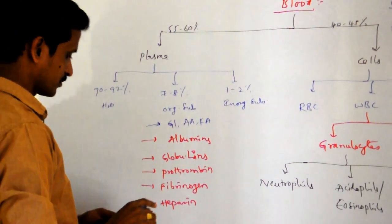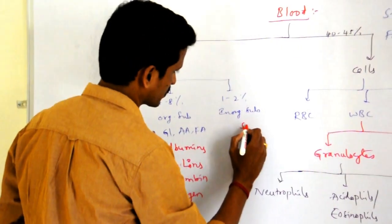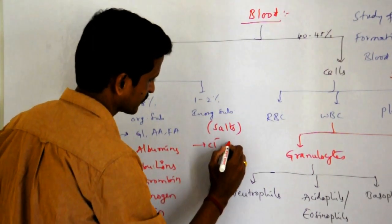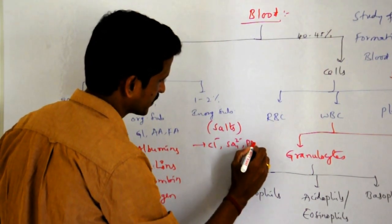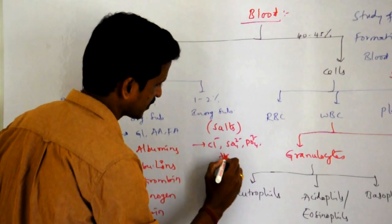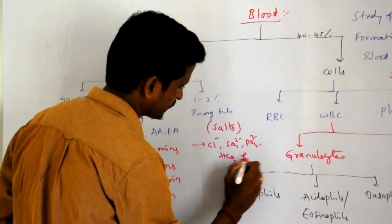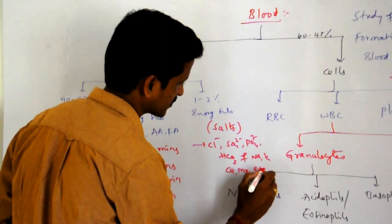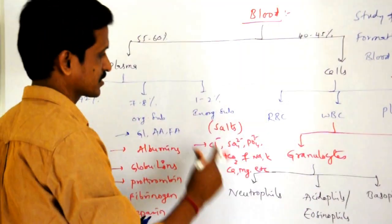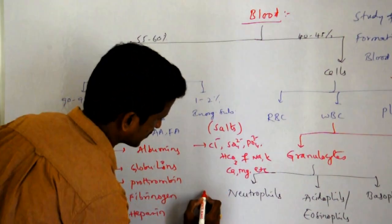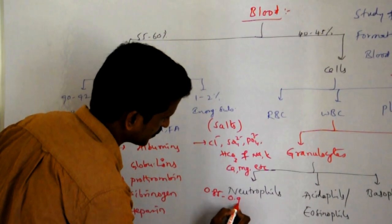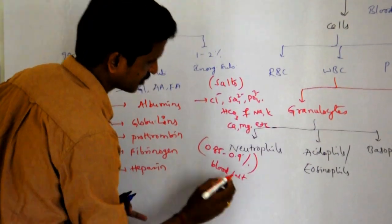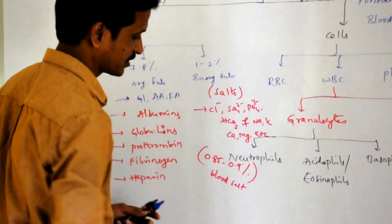Among inorganic substances, it includes total salts present in the body, which includes chlorides, sulfates, phosphates, and bicarbonates of sodium, potassium, calcium, magnesium, etc. The total inorganic substances present in the blood is approximately 0.85 to 0.9 percent. This is the total blood salt content.